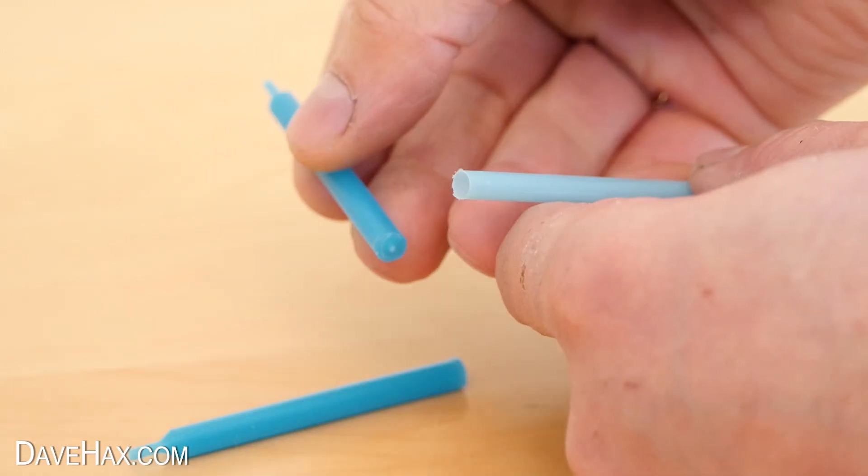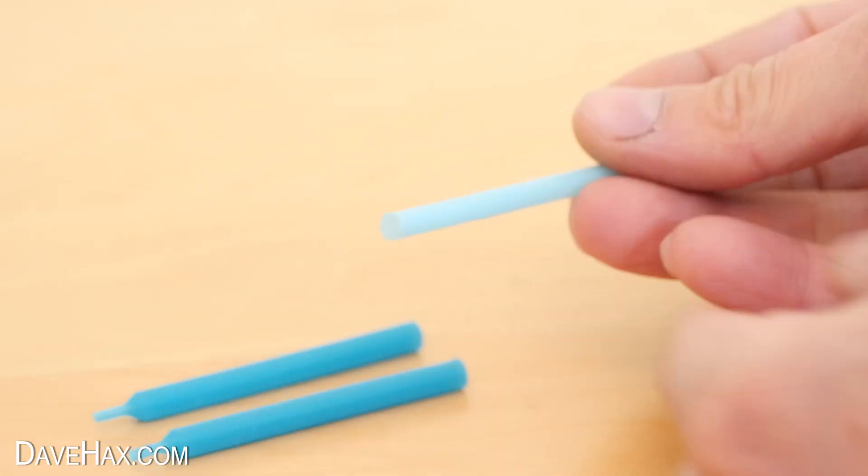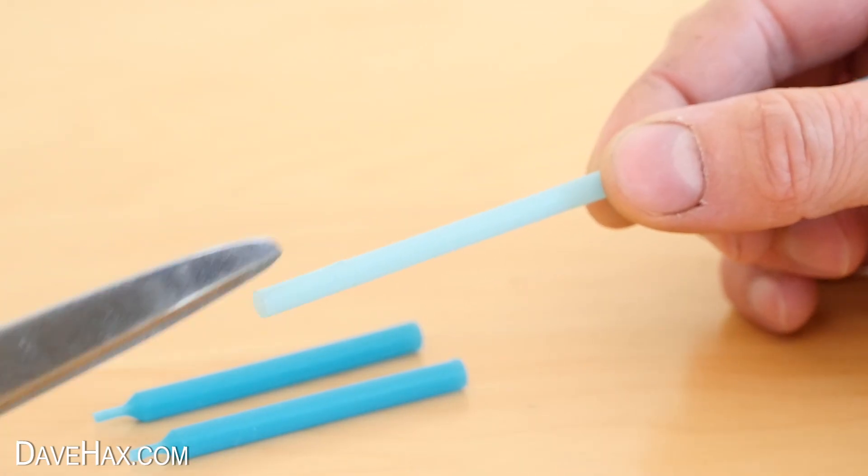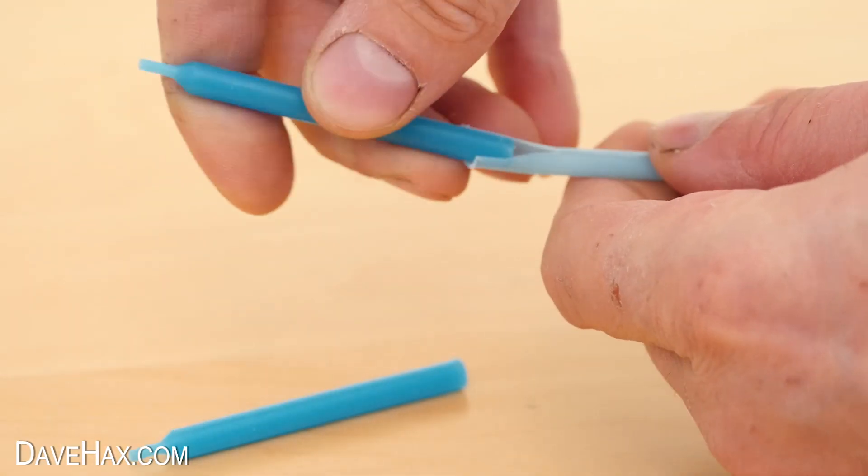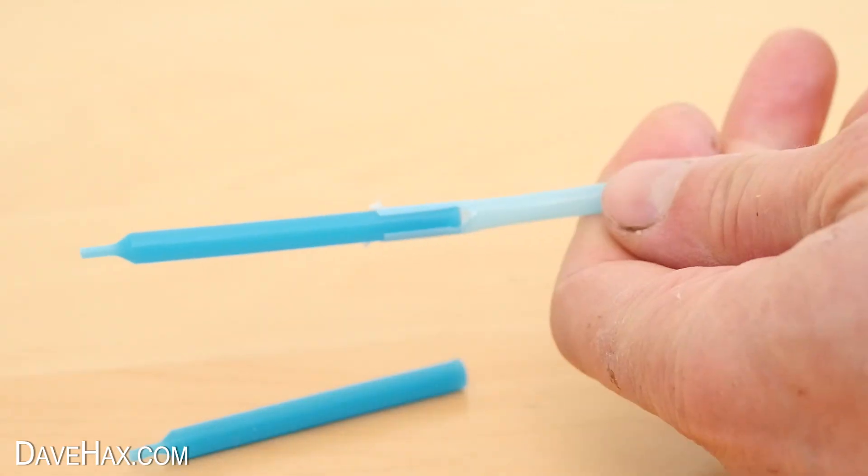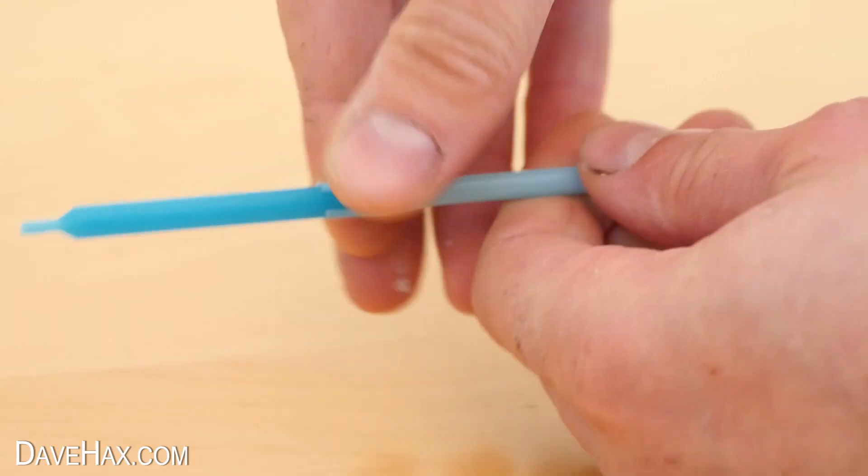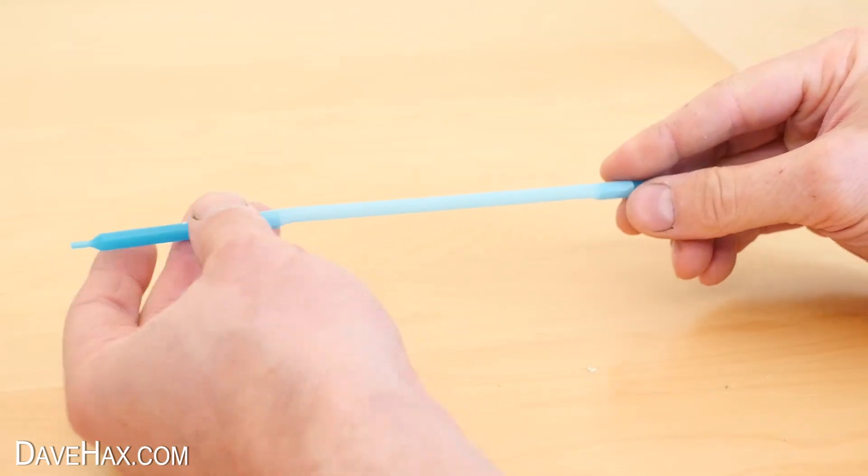And we want to try and fit them inside of the straw. If the straw is too small, you can use some scissors to slice the end and open it up enough to hold the candle. Do the same at the other end, and it should look like this.